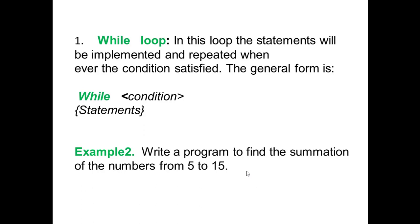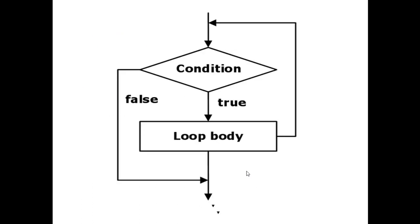We can see the next example: write a program to find the summation of the numbers from 5 to 15. We see the flowchart for the while condition on the screen. The first step: we check the condition. If the condition is true, we do the loop body; otherwise, we do the next statements.